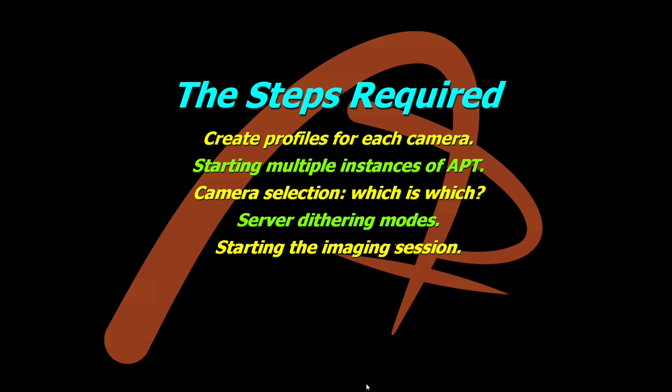We'll go through camera selection — deciding which camera is going to be the server and which will be the client. Then we'll look at the dithering modes for the server, because the server controls everything to do with the mount. Finally, I'll give a demonstration of an imaging session setup — I'll be running the sim camera as a CMOS on my main setup and have my DSLR connected with the lens cap on, just to show you how it works.